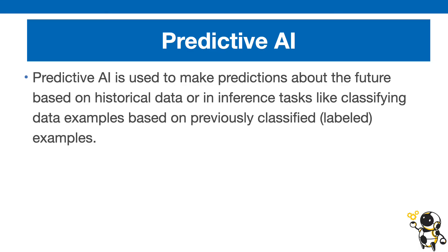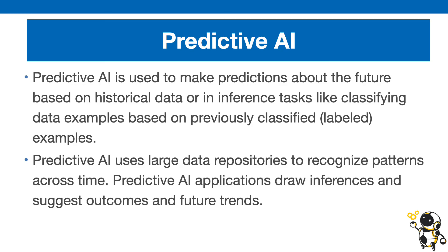Predictive AI is also used a lot in financial markets as well as trading. You can feed the AI algorithm all of the past data about a specific stock, and then it's going to predict the future price of that stock. Essentially it's using past data to predict the future. Predictive AI uses large data repositories to recognize patterns across time and draw inferences about what outcomes and trends may be in the future.